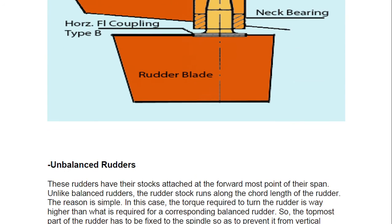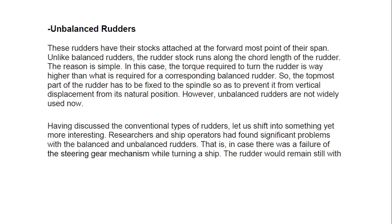An unbalanced rudder has the stock attached at the forward-most point of the rudder rather than at the center-of-gravity position. Unlike the balanced rudder, the rudder stock runs along the full chord length of the rudder. As a result, the torque required to turn an unbalanced rudder is far higher than that required for a corresponding balanced rudder. The key difference is: in an unbalanced rudder the stock runs throughout, requiring more torque and higher energy and fuel consumption compared to the balanced rudder.